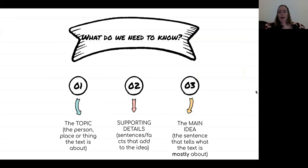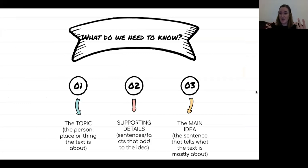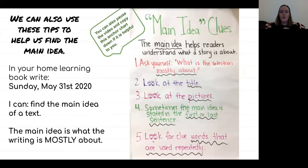All right, welcome back. So things that we need to know: we need to know the topic — we need to know what the paragraph or the piece of writing is about. We need to find supporting details, so things that help prove that that's what it's about. And then the main idea, which is the sentence or the part that tells us what the text is mostly about. So here are some other tips we can use to help us find the main idea sometimes.